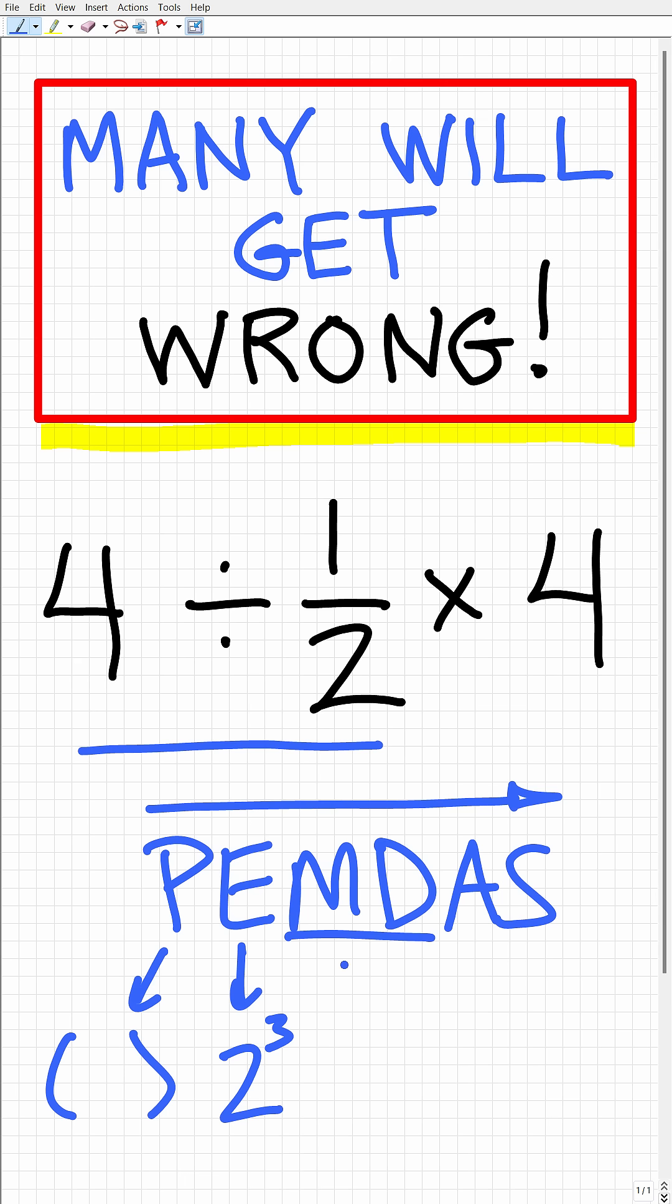M and D stand for multiplication and division. Now the way this works is the following. You're not just going to always do multiplication and then division.